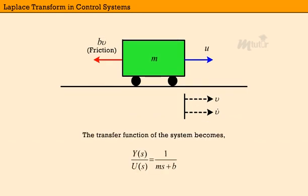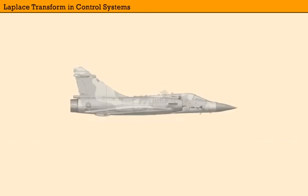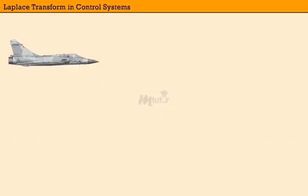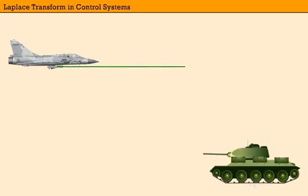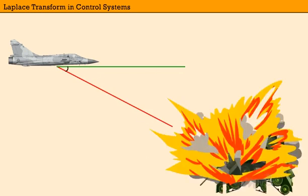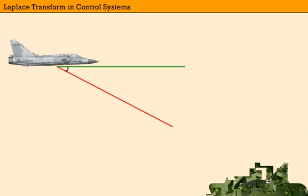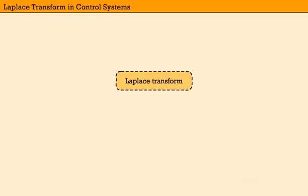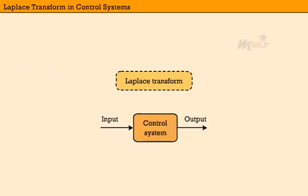And the second one is Missile Launcher. In a missile launcher, the Laplace Transform is needed to find out the required turn to track down the enemy aircraft at any time. Now, hope you understood how Laplace Transform is used in a control system and its applications.